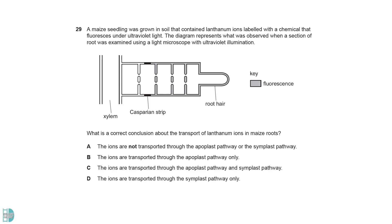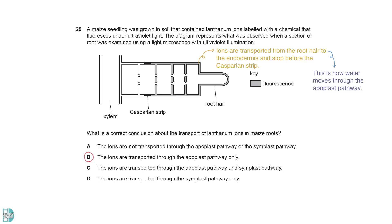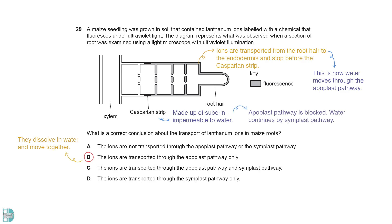The fluorescence shows that the ions are transported from the root hair to the endodermis and stopped before the Casparian strip. This shows the same movement when water moves through the apoplast pathway — they dissolve in water and move together with it. Since the Casparian strip is made up of suberin, it is impermeable to water and the apoplast pathway is blocked. Water continues by the symplast pathway, but the leaking of fluorescence indicates that the ions do not follow from here onwards.